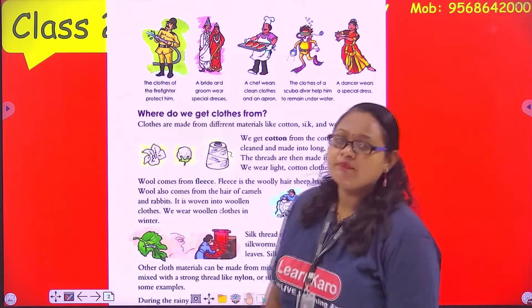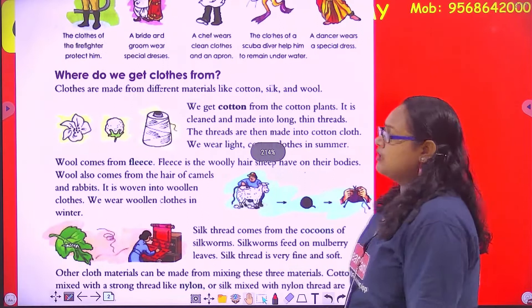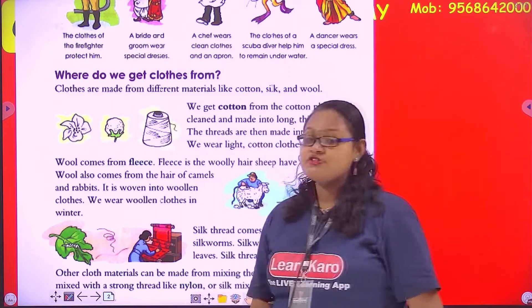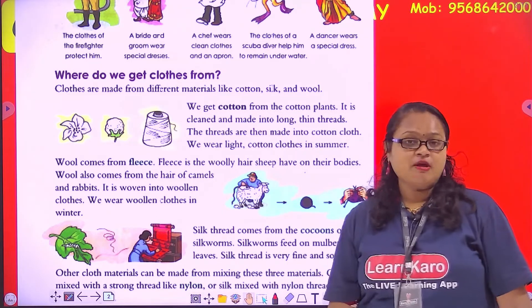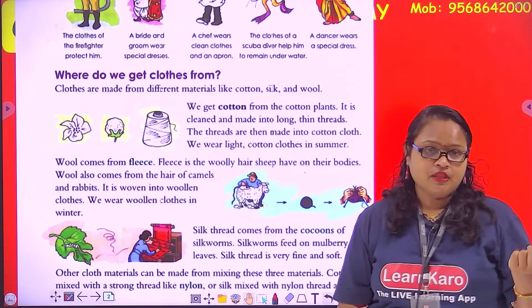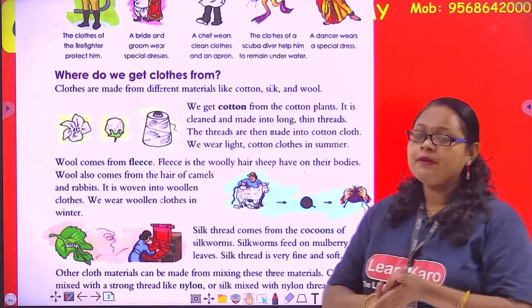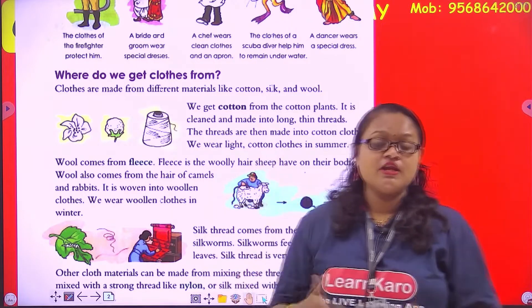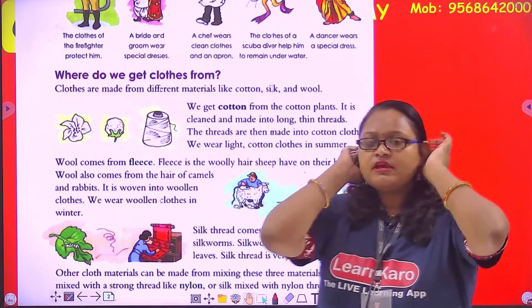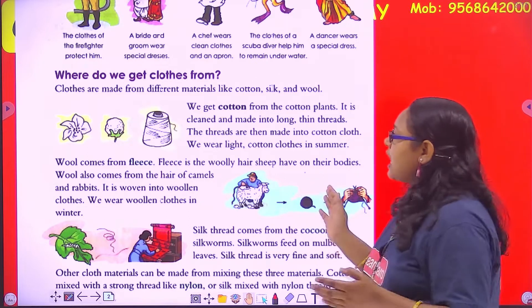Clothes of a scuba diver help him remain under water, and a dancer wears a special dress. Everyone has their own special clothes. Now the main question is: where do we get clothes from? Just like last chapter we asked where we get food from — and the answer was from plants and animals — here we ask: where do we get clothes from?